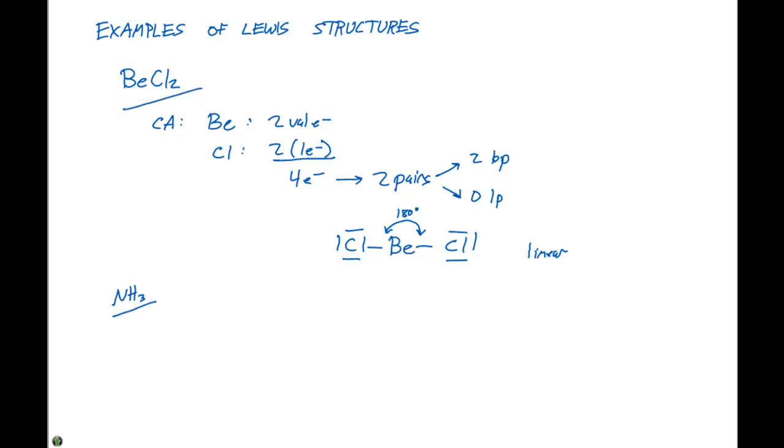For ammonia, our central atom is going to be nitrogen because it only shows up once in our formula. For nitrogen, we have five valence electrons. Hydrogen is going to contribute one electron to the central atom, and we have three of them.